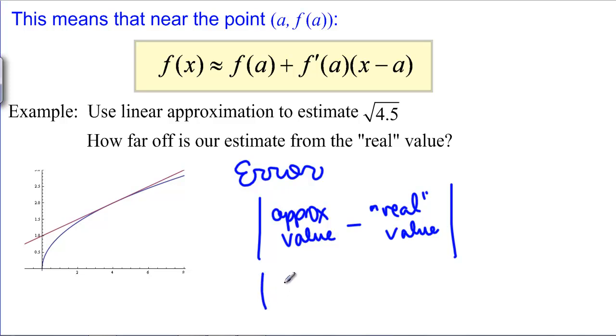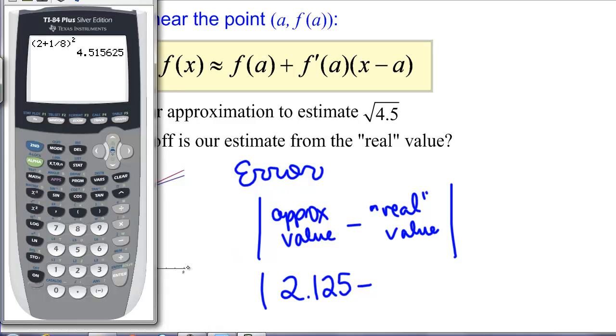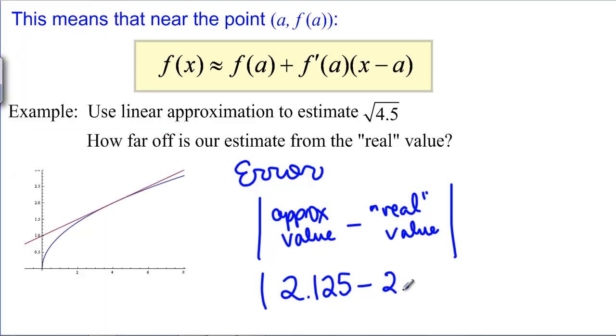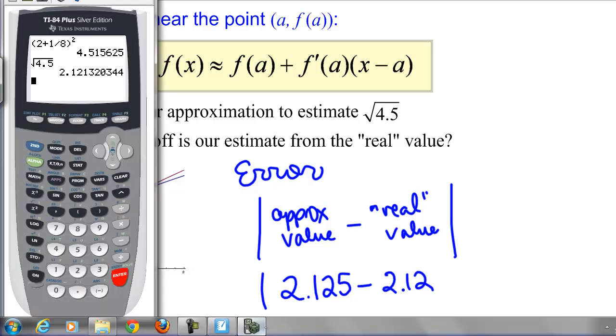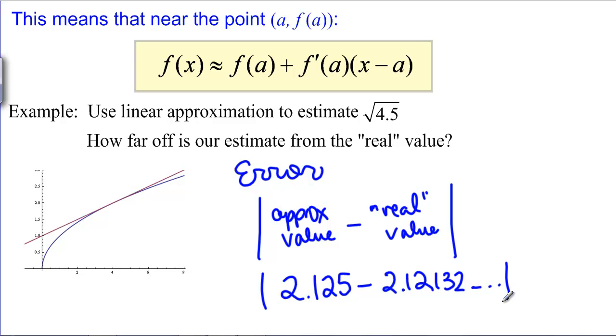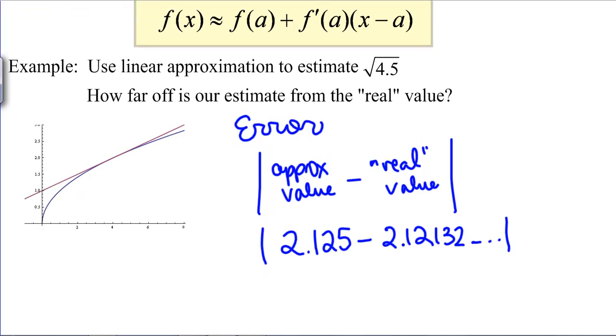Our approximate value was 2 and 1 eighth so that's 2.125 minus the calculator here. It's going to give me the square root of 4.5 to be 2.12132 and of course it keeps going on. It's an irrational number so it never actually repeats. It never ends. You can't write it as a fraction but we can at least get some idea how big the error is by comparing this approximation which we're assuming is not as good as the calculator approximation. So subtracting those two numbers, we're going to get...